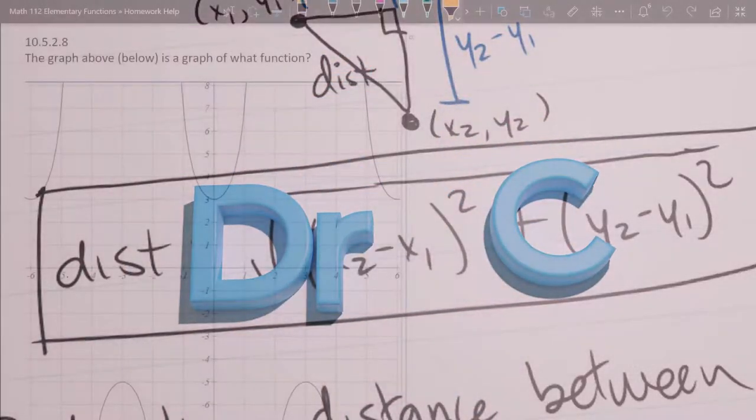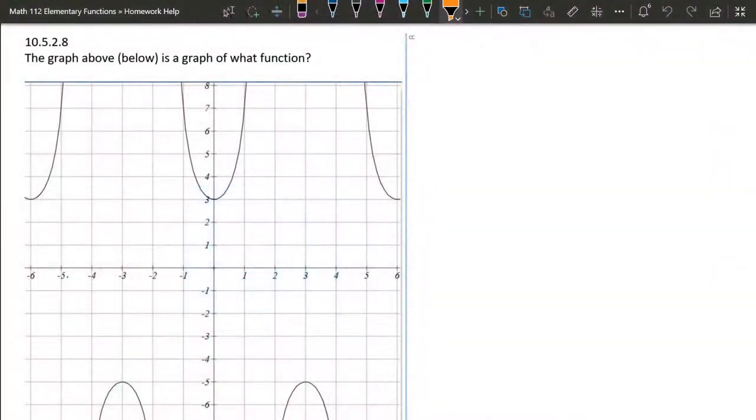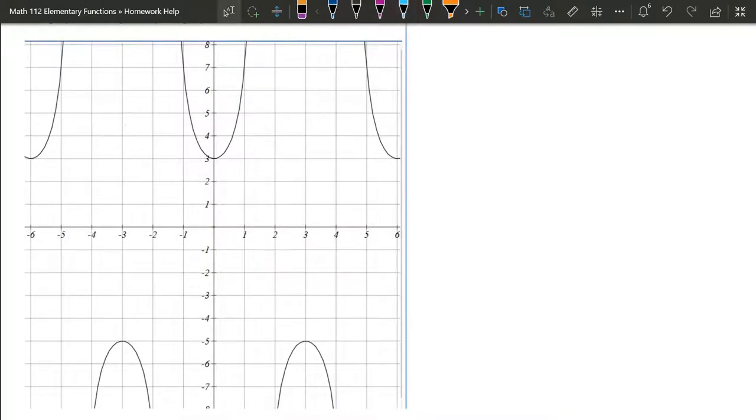In question number eight, there's a graph. It's either secant or cosecant. Just off the start here, I don't know which one it is. So what we're going to do is add a few things to this graph. First thing we're going to do is add the vertical asymptotes.